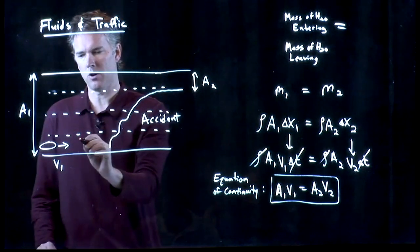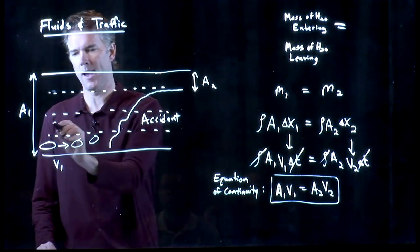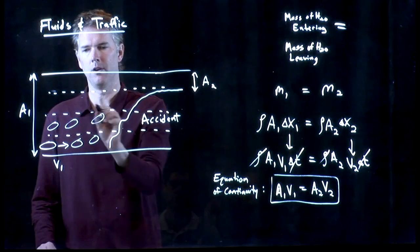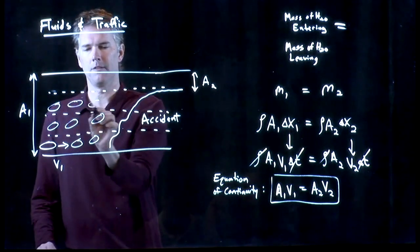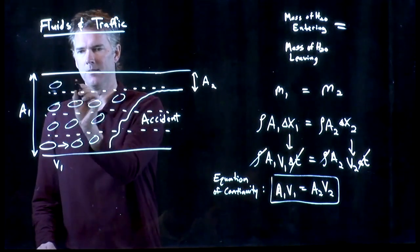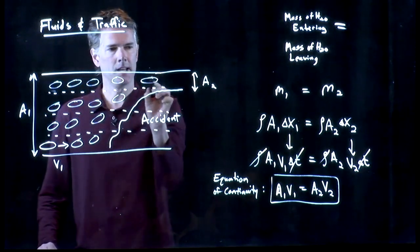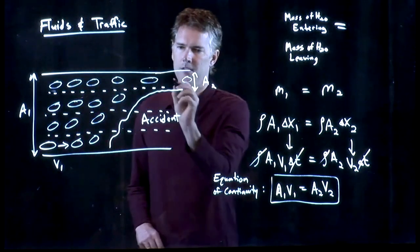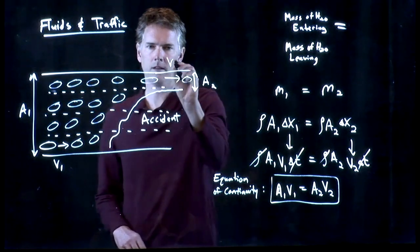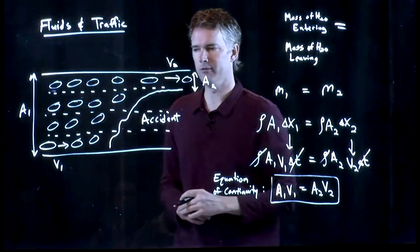So you know what happens. All the cars stack up here, and then they have to start merging over. And there's lots of cars and lots of density. But as soon as they get into this region, they start moving at a speed V2.